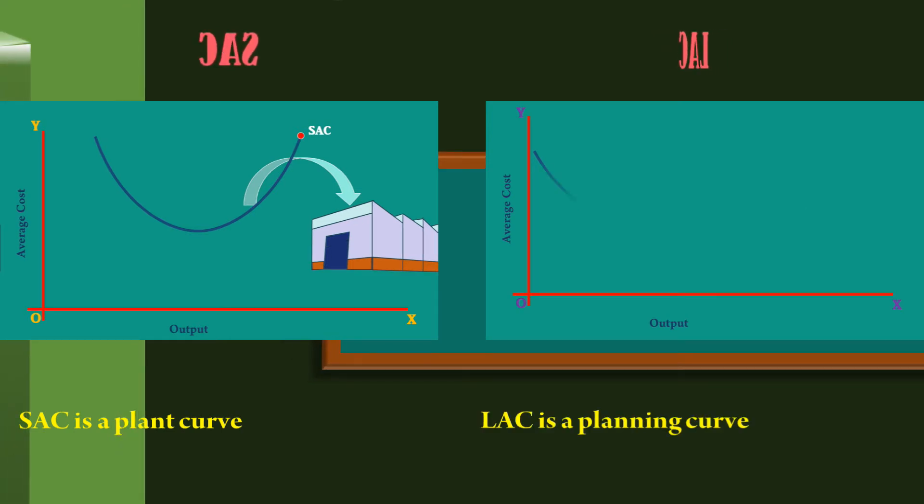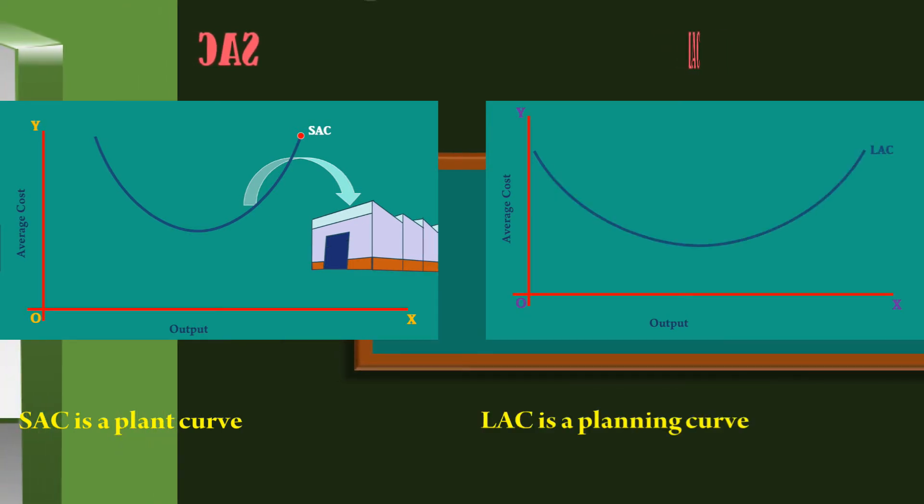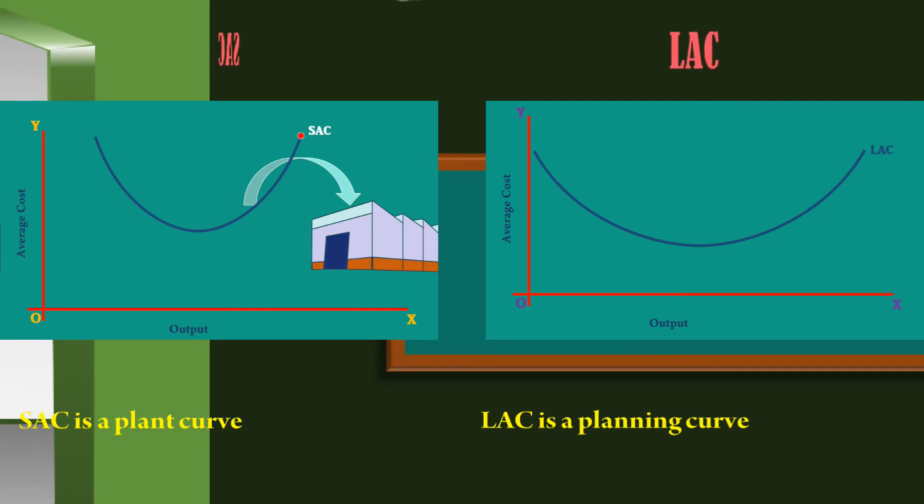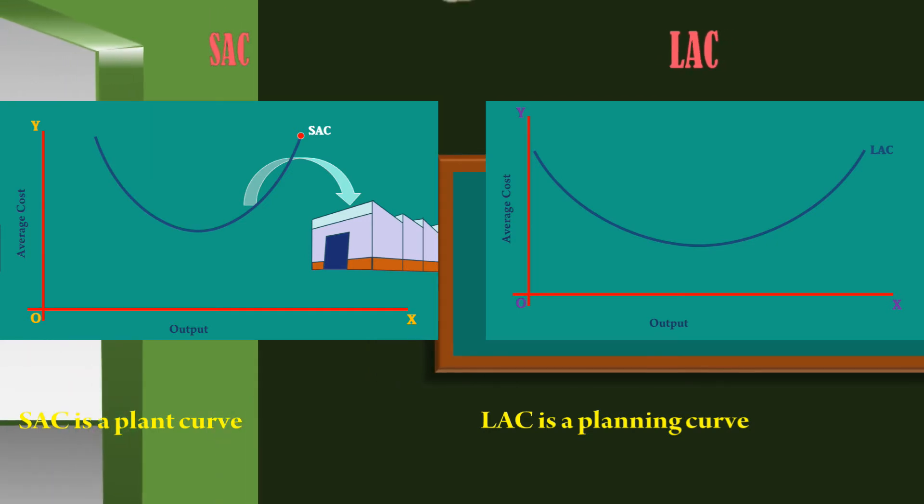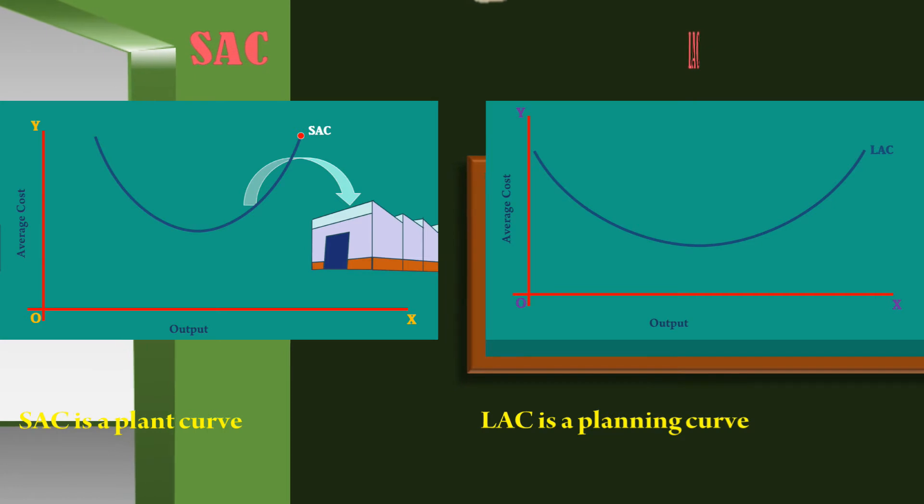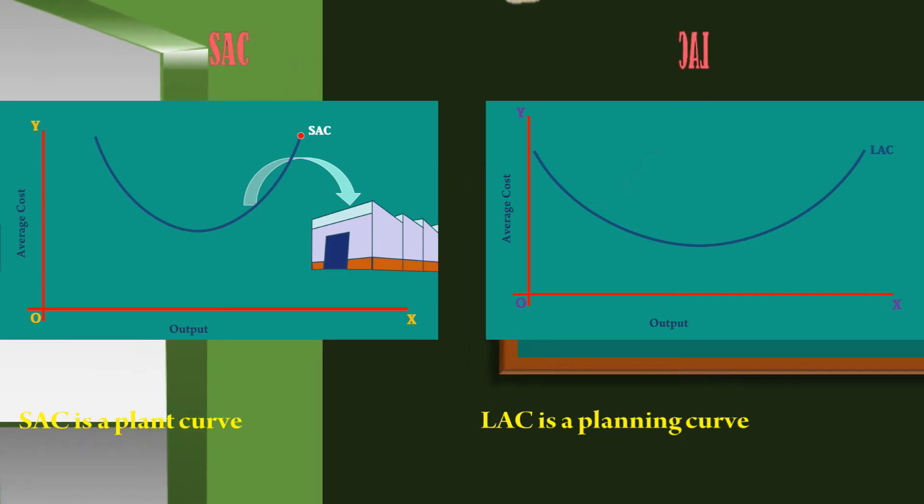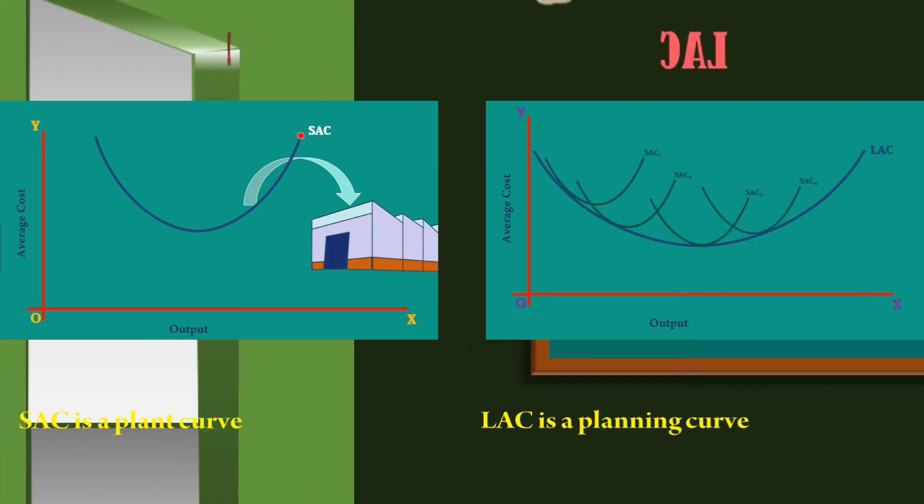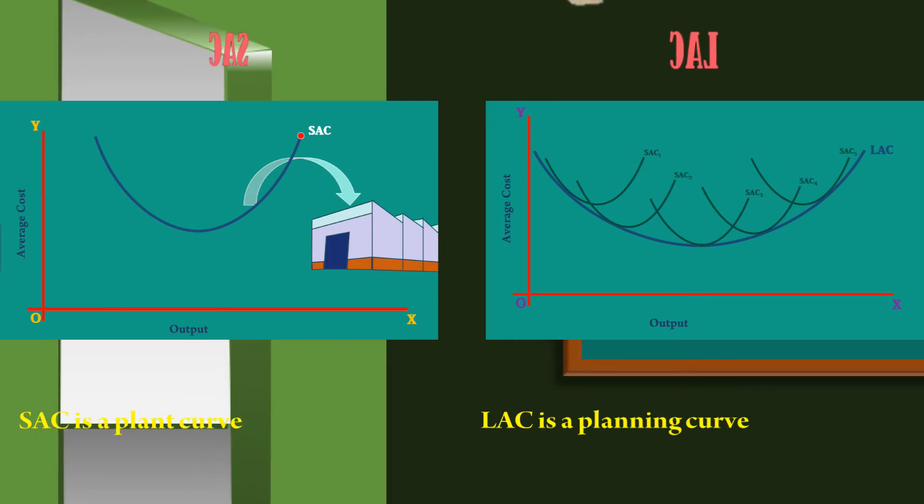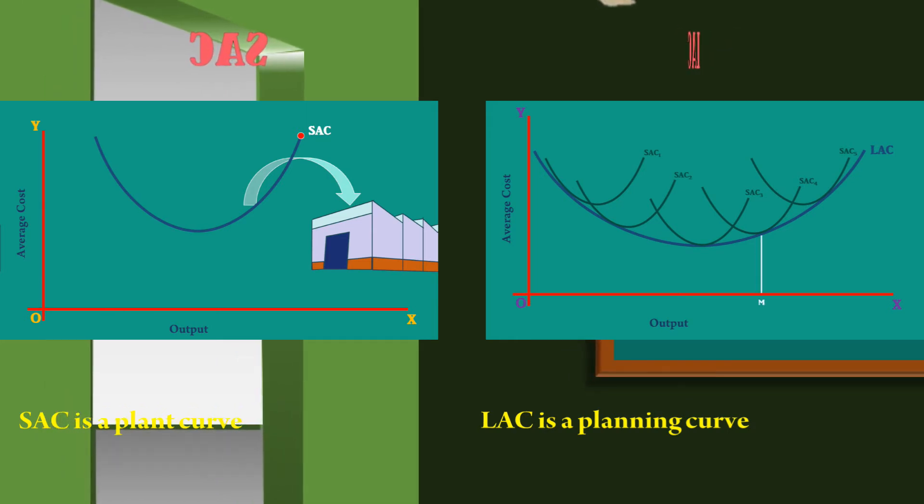The long run average cost curve is a planning curve. The firm moves along the long run average cost curve. It means, it can move from one plant size to another plant size to produce a given level of output.